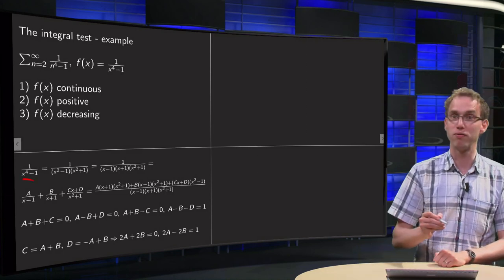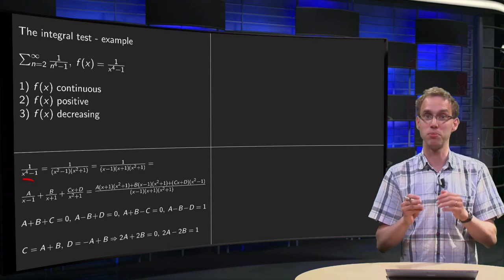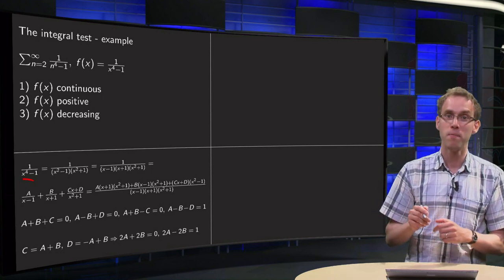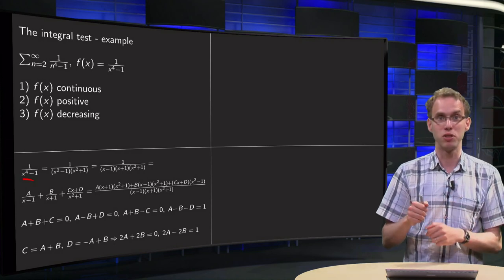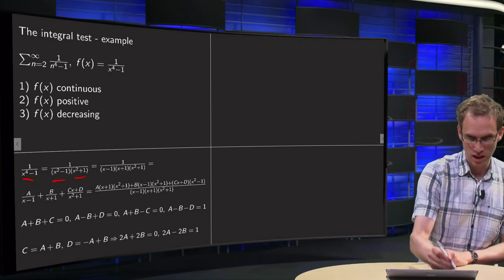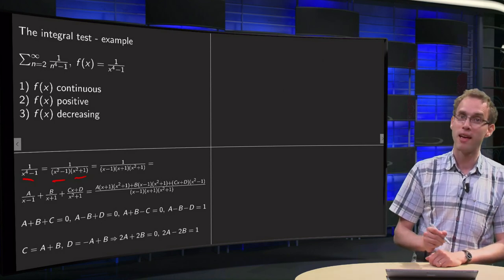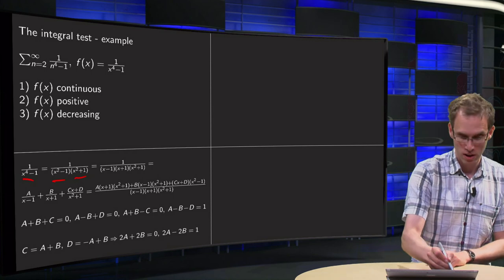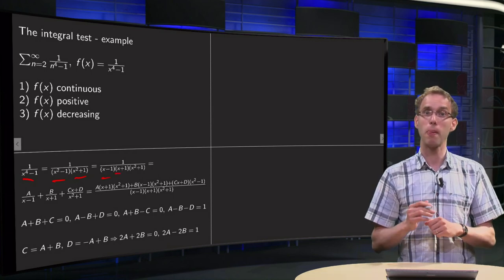We have 1 over x to the power of 4 minus 1. We recognize it as something of the form (a+b)(a-b), where a equals x squared and b equals 1, so we can factorize it as (x² - 1)(x² + 1). Then we can factorize x² - 1 further to (x - 1)(x + 1).